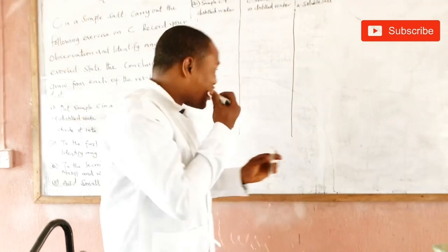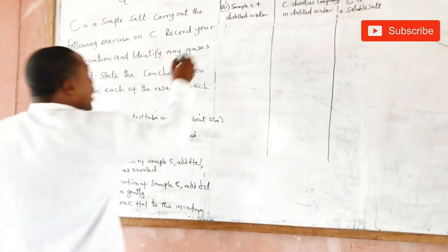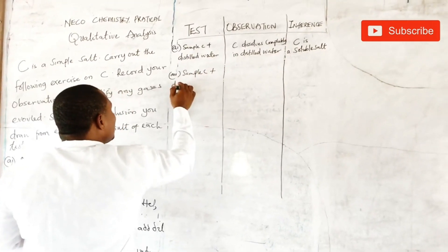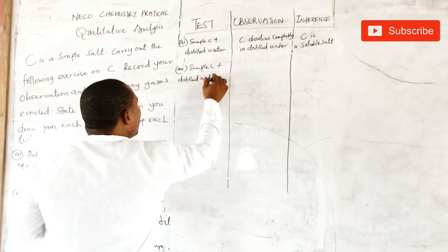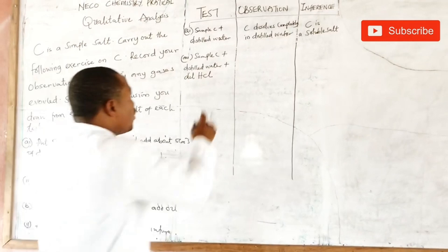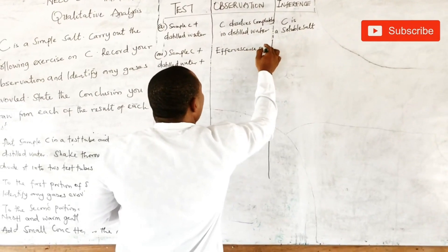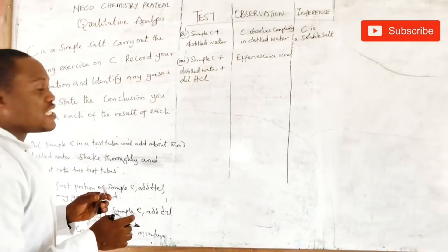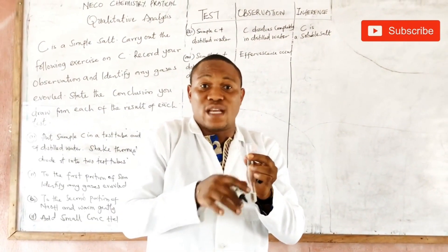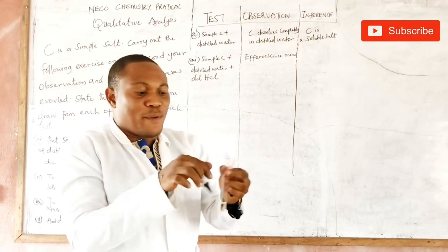You can see the bubbling of gas in liquid — that shows the evolution of gas, meaning a gas is being evolved. I'm testing it with my blue litmus paper. So what can I infer? Roman figure (a)(ii): Sample C + distilled water + dilute HCl. Observation number one: I notice what we call effervescence. Effervescence is the bubbling of gas in liquid, representing the evolution of gas. I test the gas with my blue litmus paper.